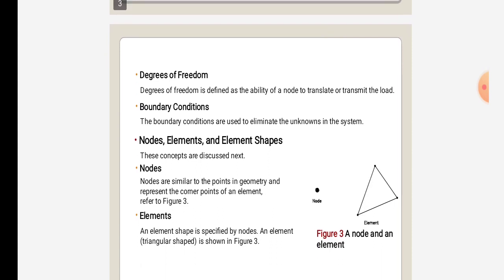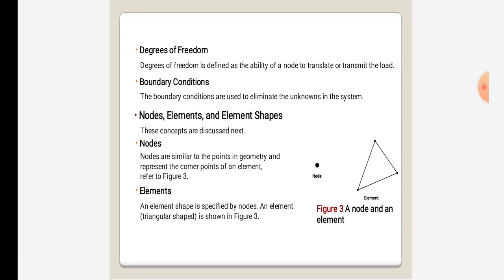Nodes are similar to points in geometry and represent the corner points of an element. In elements, the element shape is specified by nodes. An element is shown for a triangular shape, as illustrated in the figure.